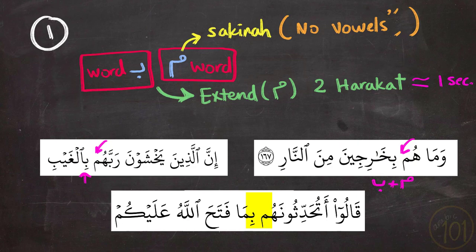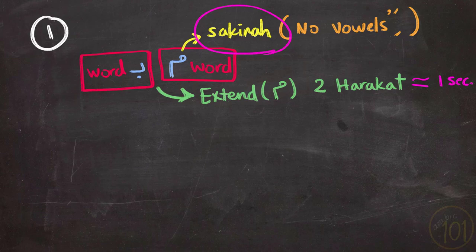Notice that the Meem has to have Sukoon for this to work. And this effect disappears if there is a vowel on top or under the Meem, even if it is followed by a Ba', like in these examples.